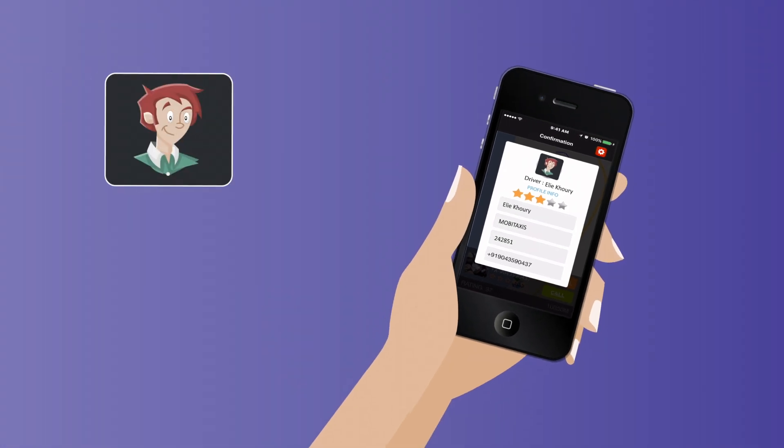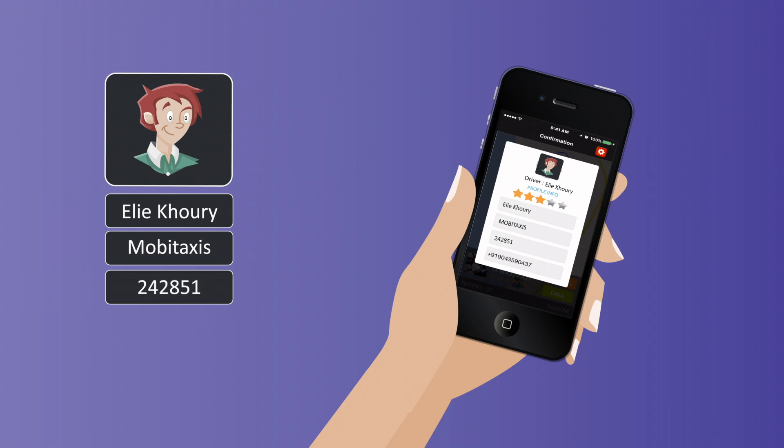MobiTaxis can show you a picture of the driver, his name, company, and license plate numbers so there's no chance of mix-up when they arrive.